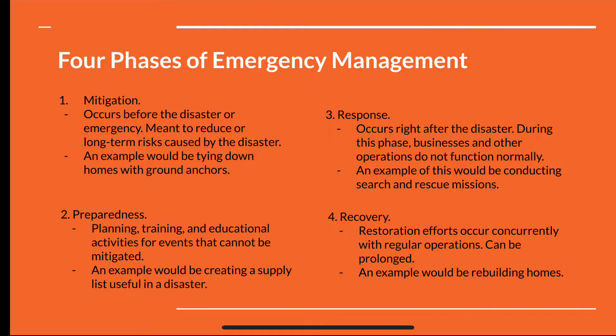There are four phases of emergency management. The first phase is mitigation, and this occurs right before the disaster or emergency. This is meant to reduce the long-term risk caused by the disaster. An example would be tying down homes with ground anchors, buying insurance policies, or reinforcing fences.